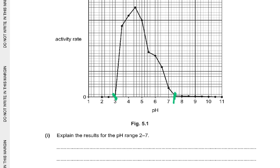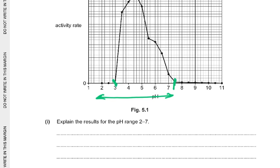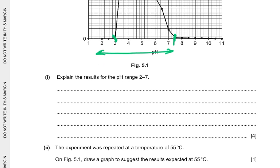Explain the results for the pH range 2 to 7. Note it says explain, not describe — that's four marks. Between pH 2 and 3 there is zero activity, meaning the enzyme is denatured. At pH 2 to 3 the enzyme is denatured, meaning the active site of the enzyme has changed shape, so the substrate no longer fits the active site.